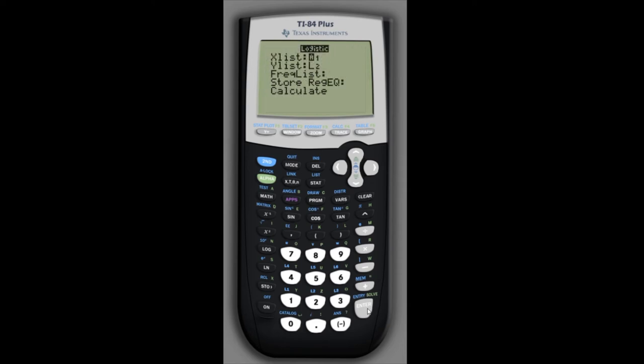So if we hit enter, again as long as we've entered the years in list one and the populations in list two nothing needs to be changed here. So we can simply scroll down to calculate and it will give us the model for this logistic regression example.